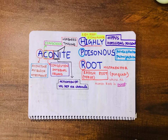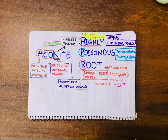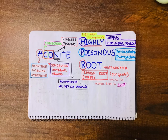In the word 'poisonous,' P stands for paresthesias and the other P stands for putrefaction. In aconite poisoning, there are paresthesias throughout the body. By putrefaction, remember that aconitin is very unstable and is destroyed after putrefaction.